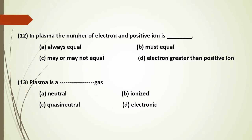In plasma, the number of electrons and positive ions — are they always equal, must be equal, or approximately equal? The answer is that they remain approximately equal, maintaining quasi-neutrality.